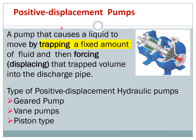The second type is the positive displacement pump. This is a pump that causes the liquid to move by trapping a fixed amount of fluid and then forcing or displacing that trapped volume into the discharge port. It will first trap a fixed amount then pump it to a particular place. It is not like the non-positive displacement type where it simply takes the input and channels it to another place.